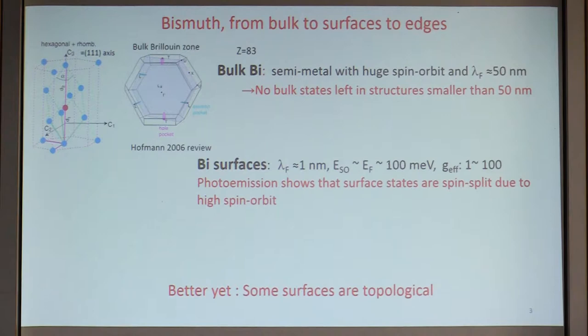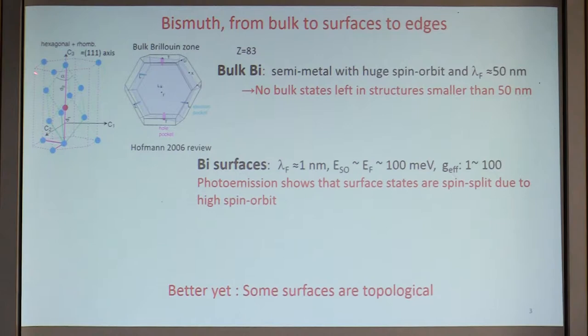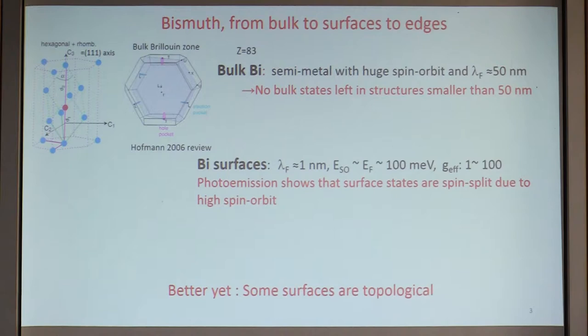Here's bismuth, which is actually a complicated material. The bulk bismuth has a Fermi surface made up of several types of carriers — electron pockets and hole pockets — with very strong anisotropy due to the crystalline arrangement. When you look at the atomic structure along this C3 or 111 axis, it looks like graphene when viewed from atop. Bulk bismuth is a nice material to work with because it's a semi-metal with a huge spin-orbit interaction and a huge Fermi wavelength. The Fermi wavelength is 50 nanometers — about 100 times what it is in usual metals — which means that if you make a structure smaller than 50 nanometers, you have no bulk states left, so you have to take care of the surfaces.